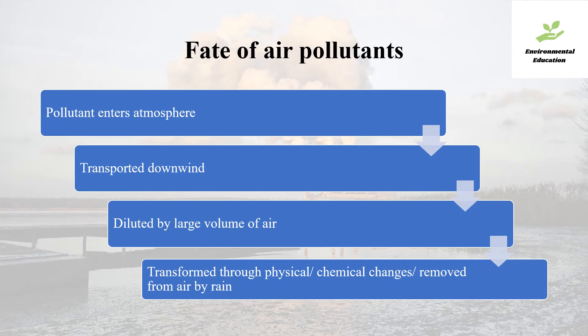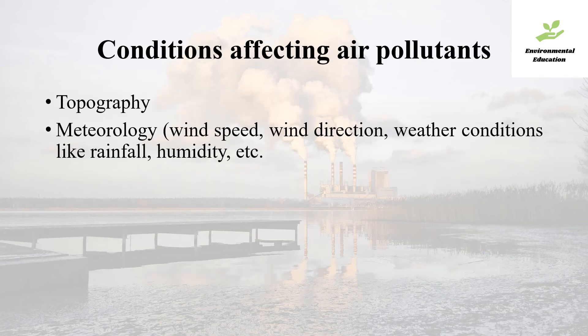Now let us see what is the fate of air pollutants once released into the atmosphere. Firstly, the pollutant enters the atmosphere, it gets transported downwind, it is diluted by the large volume of air, and finally it is transformed through physical and chemical changes or removed from air by rain. The conditions affecting air pollutants are the topography of the area and meteorological conditions like wind speed, direction, weather conditions, etc.